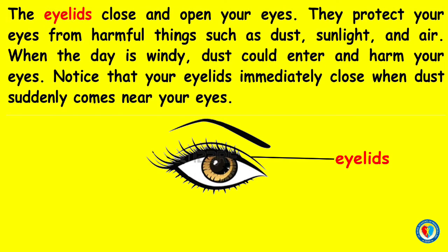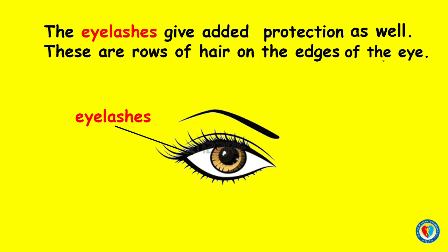The eyelids close and open your eyes, and they protect your eyes from harmful things such as dust, sunlight, and air. When the day is windy, dust could enter and harm your eyes. Notice that your eye is immediately closed when dust suddenly comes near your eyes. The eyelashes give added protection as well. These are rows of hair on the edges of the eye.